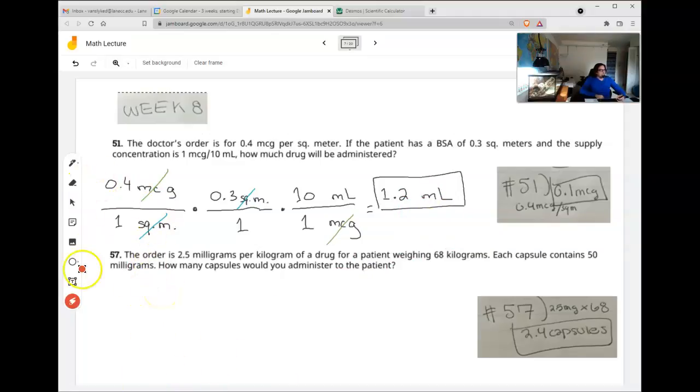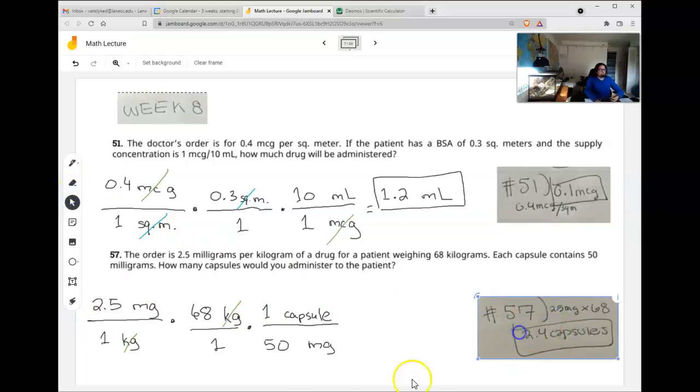57 is similar. The order is 2.5 milligrams of drug per 1 kilogram of how much the patient weighs. The patient weighs 68 kilograms. That's not a fraction, so I'll put it over 1. And now the kilograms have canceled. I'm going to keep reading. Each capsule contains 50 milligrams. So I want to get rid of milligrams in the top, so I have to put it in the bottom. So it's 50 milligrams per something. What is it? Per 1 capsule.